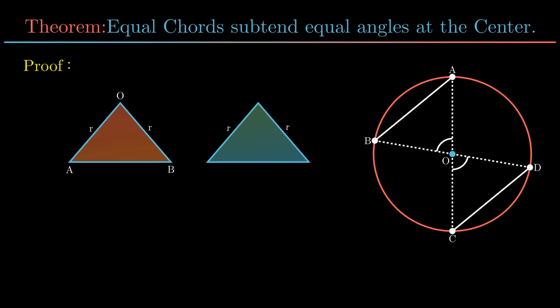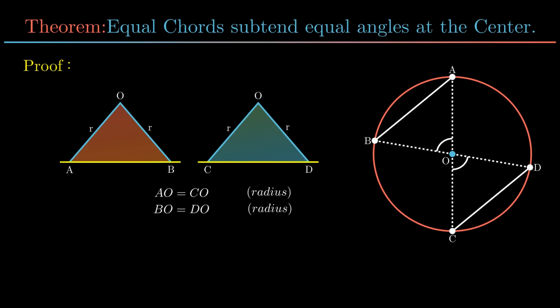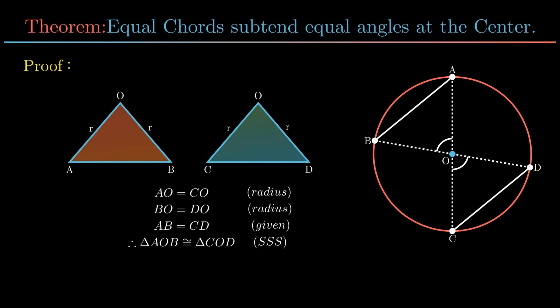The triangles so formed are congruent: side AO is equal to side CO, which are radii of the circle. Similarly, side BO is equal to side DO, also radii and thus equal. Side AB and side CD are equal, as the given chords are equal. Therefore, by SSS criteria, triangle AOB is congruent to triangle COD.